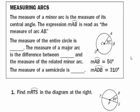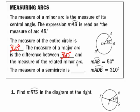Welcome to part 2 of Notes 10.1-3. We'll start talking about arcs and angles. Minor arcs measure less than 180 degrees, and the measure of a minor arc equals the measure of its central angle. The expression with a little m and the arc symbol means 'measure of arc AB.' The measure of a full circle is 360 degrees. The central angle is 50 degrees, so the measure of arc AB is also 50 degrees.